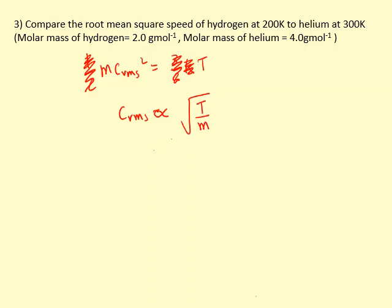What's happened to temperatures? For helium, the temperature is 3 over 1.5 times bigger. The mass of helium is 4 over 2, in other words it's two times bigger.